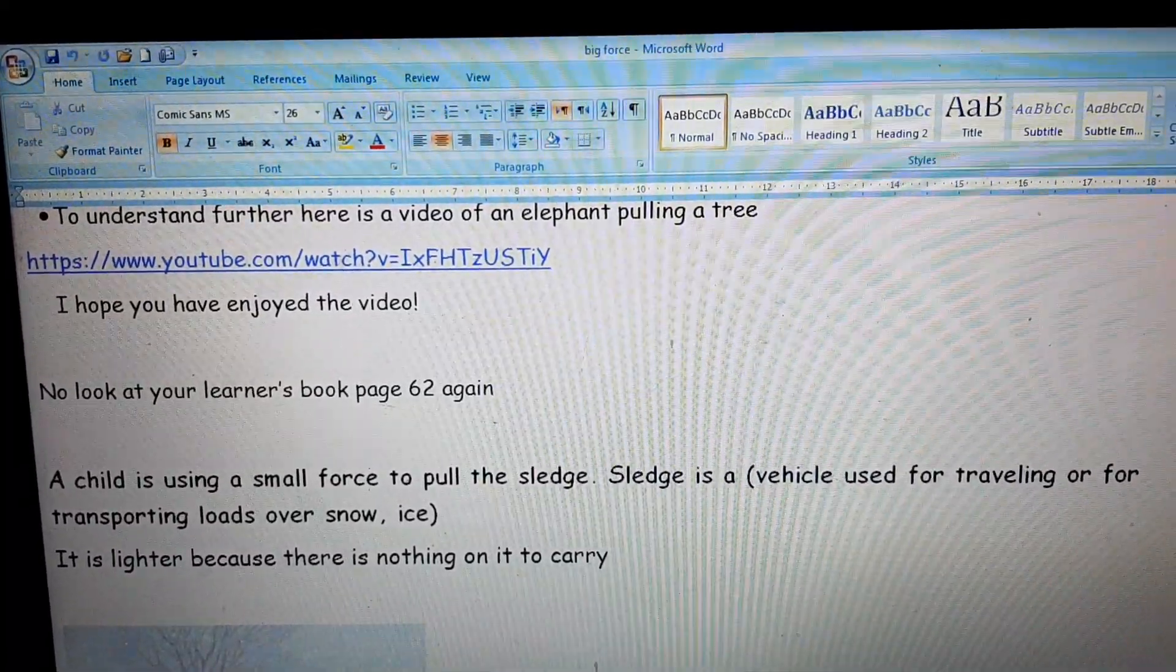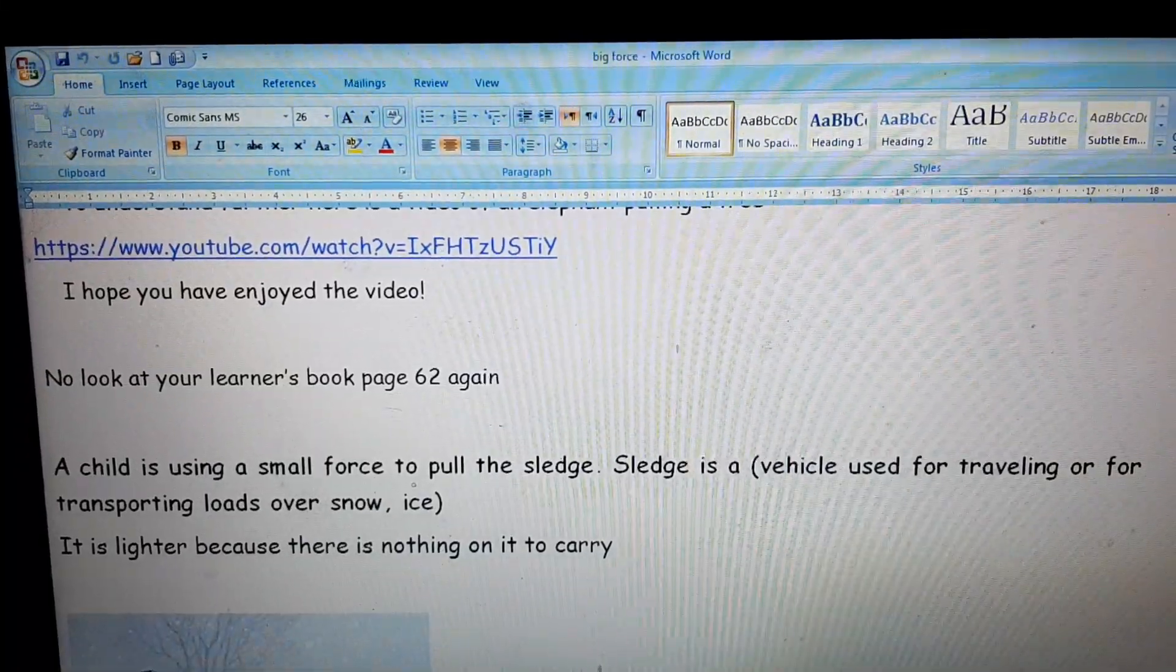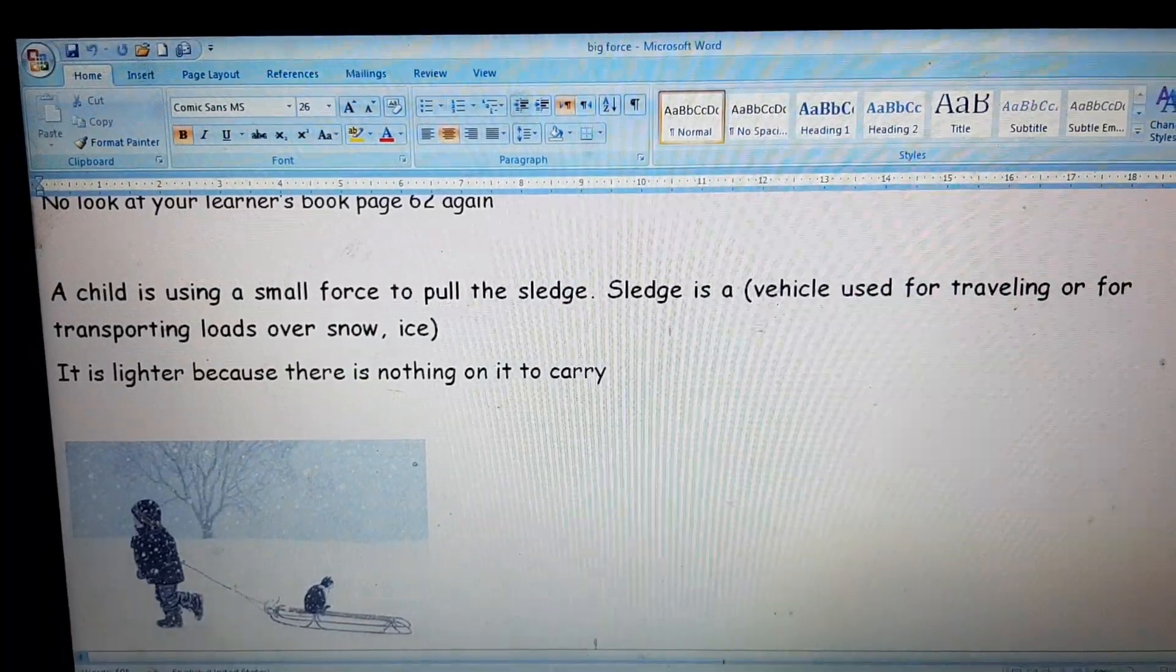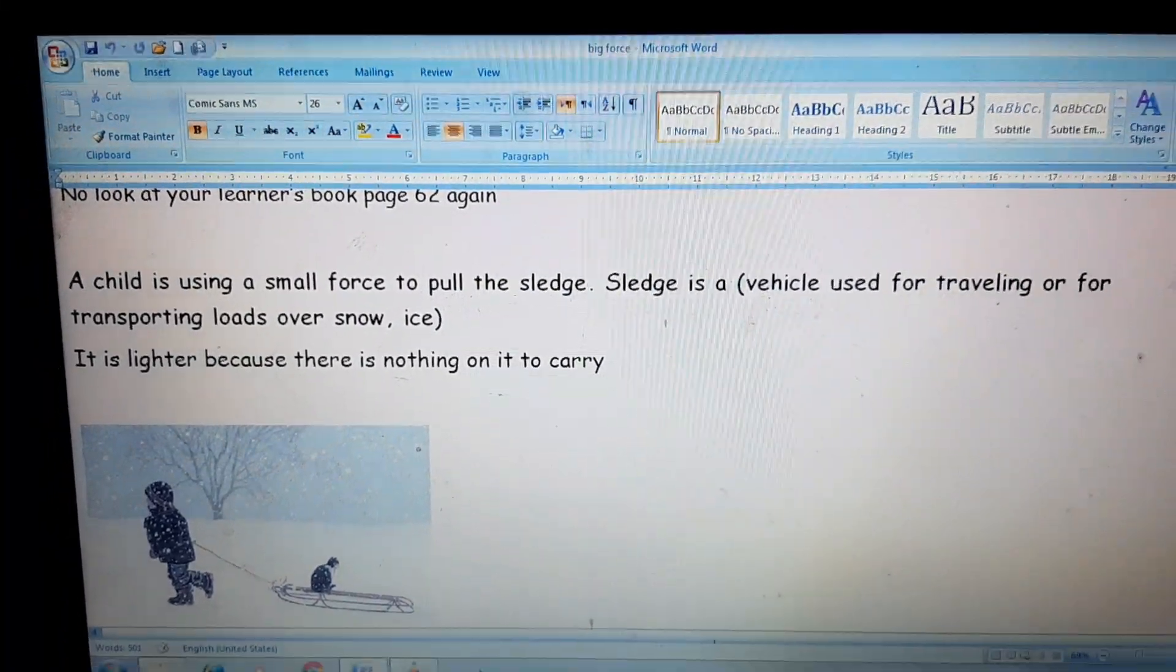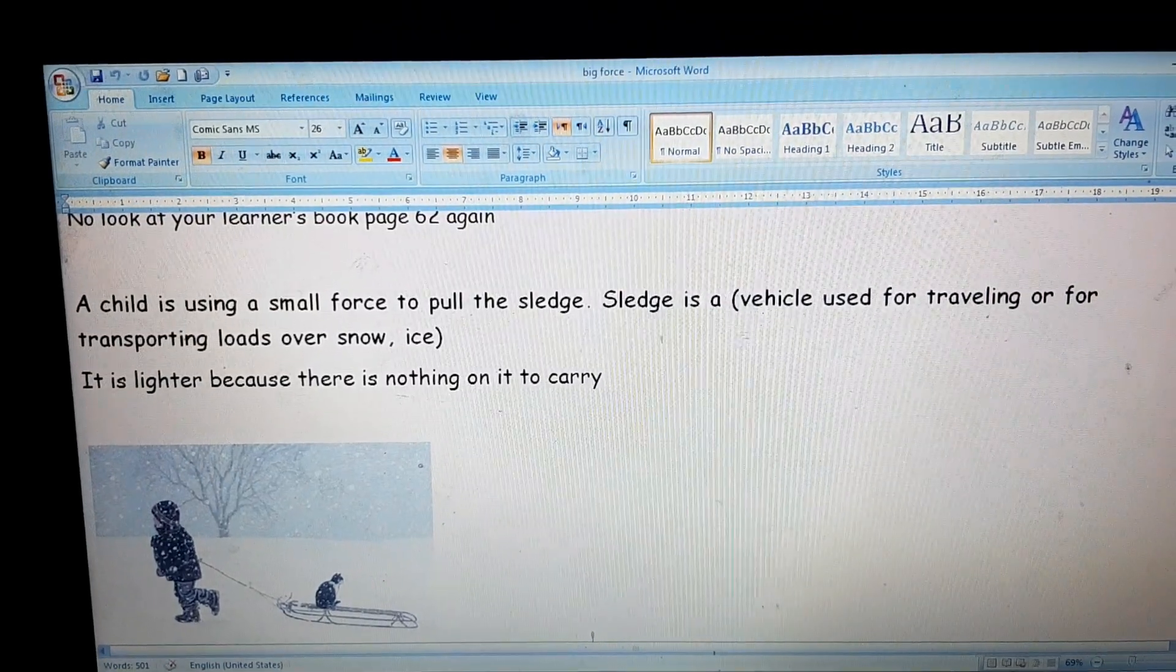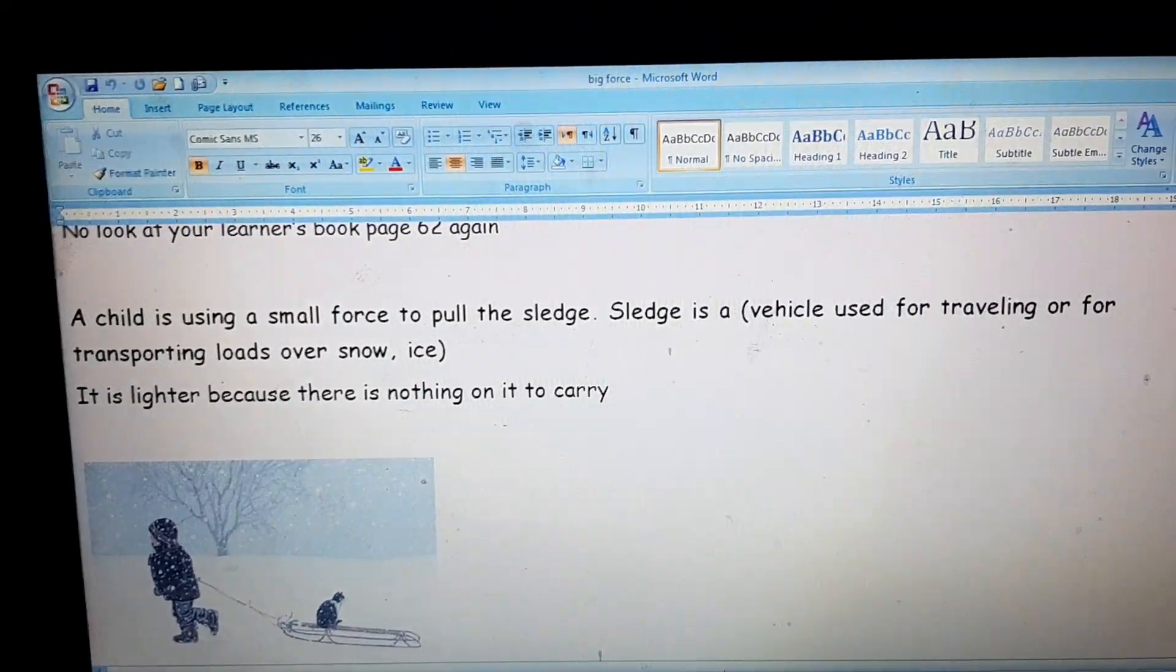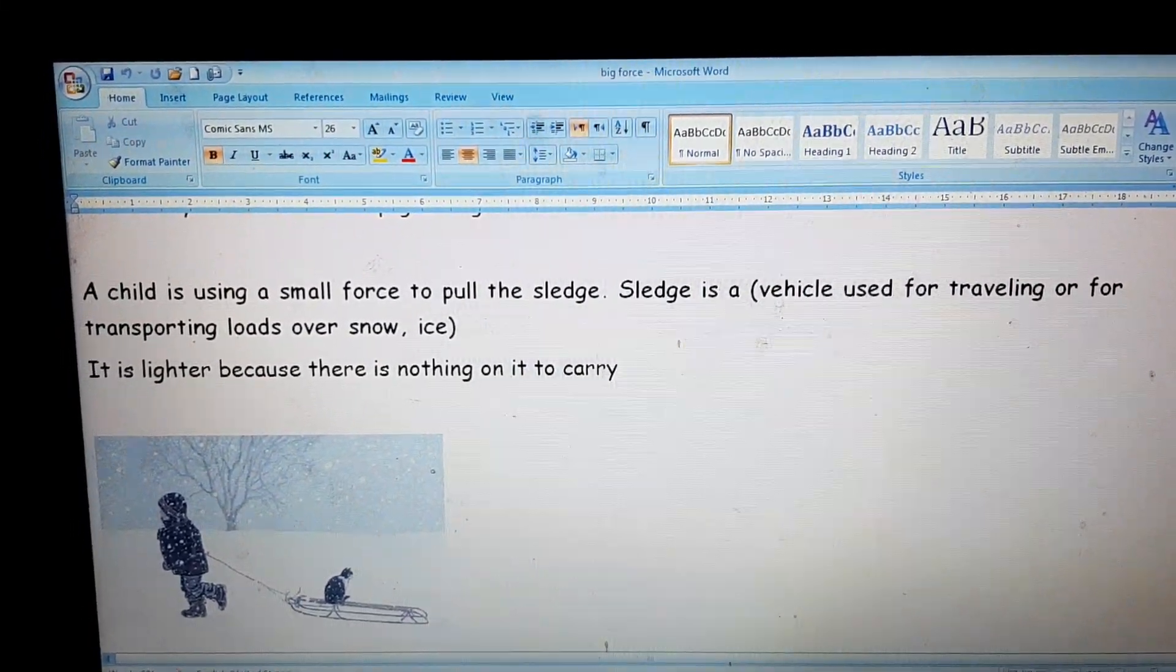So friends, hope you have enjoyed the video. Now look at your learner's book page 62 again. You can see three pictures. In one picture, a child is using a small force to pull a sledge. What is a sledge? Sledge is a vehicle used for traveling or for transporting loads over snow or ice. You can see a boy is easily pulling a sledge because there is nothing to carry on.